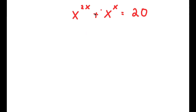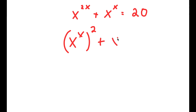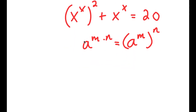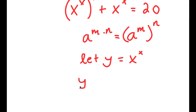In this problem, x to the power of 2x plus x to the power of x is equal to 20. To solve this, I'm going to first rewrite x to the power of 2x as x to the power of x, all squared. I can do this because a to the power of m times n is the same thing as a to the power of m, to the power of n. So now I'm going to let the variable y equal x to the power of x. So now I have y squared plus y is equal to 20.